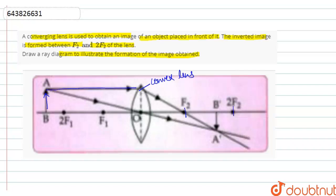The object is placed beyond 2f1 and we get the image between f2 and 2f2. So first we will pass a ray parallel to the principal axis and after striking the lens, the ray directly passes through f2, that is the focus of the lens.